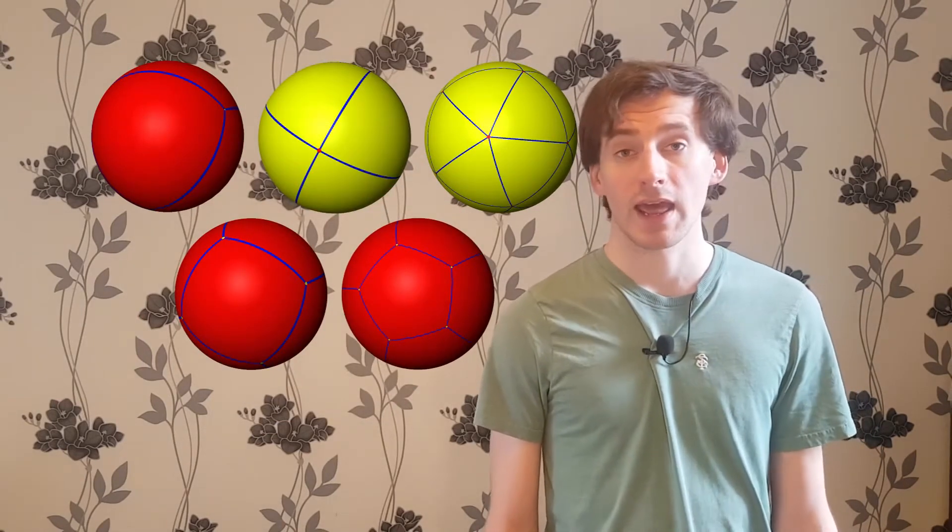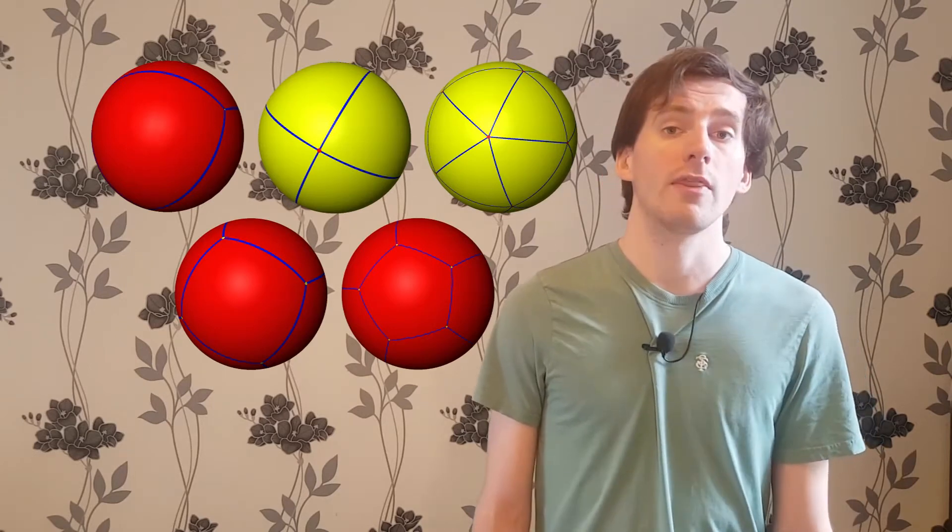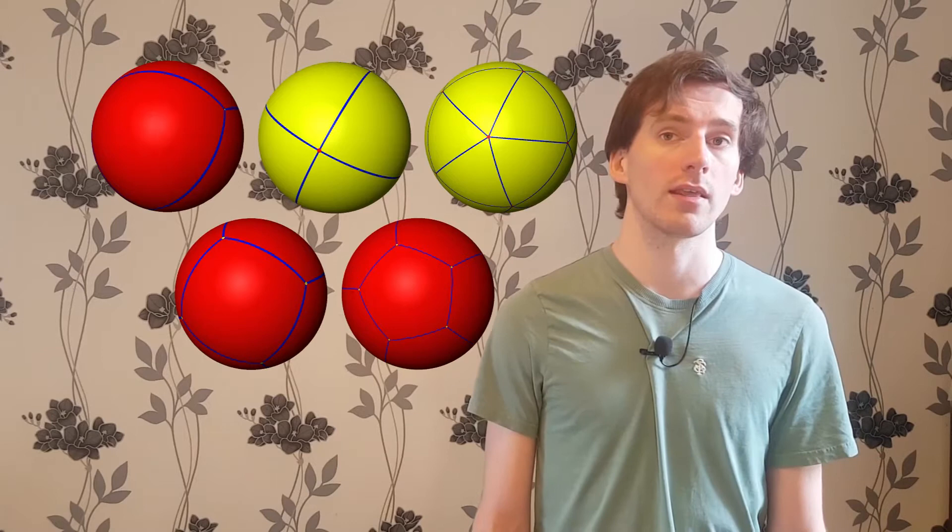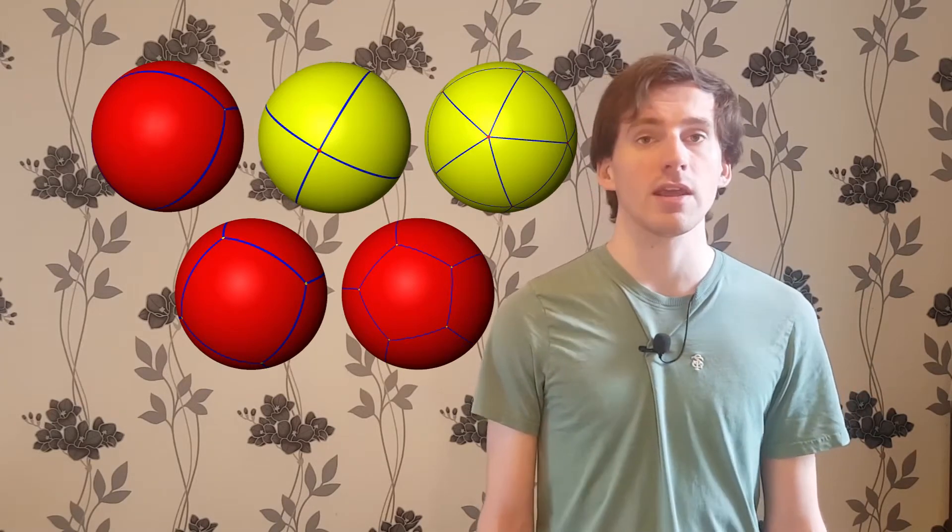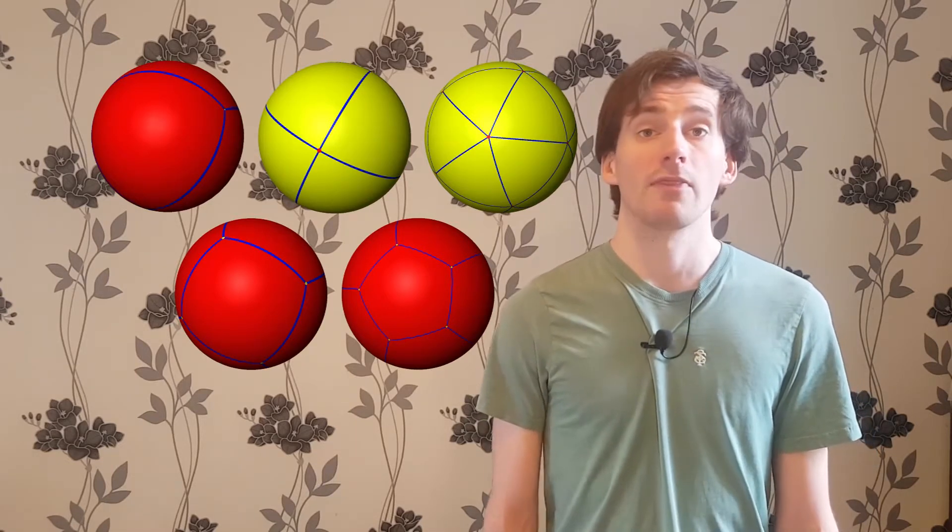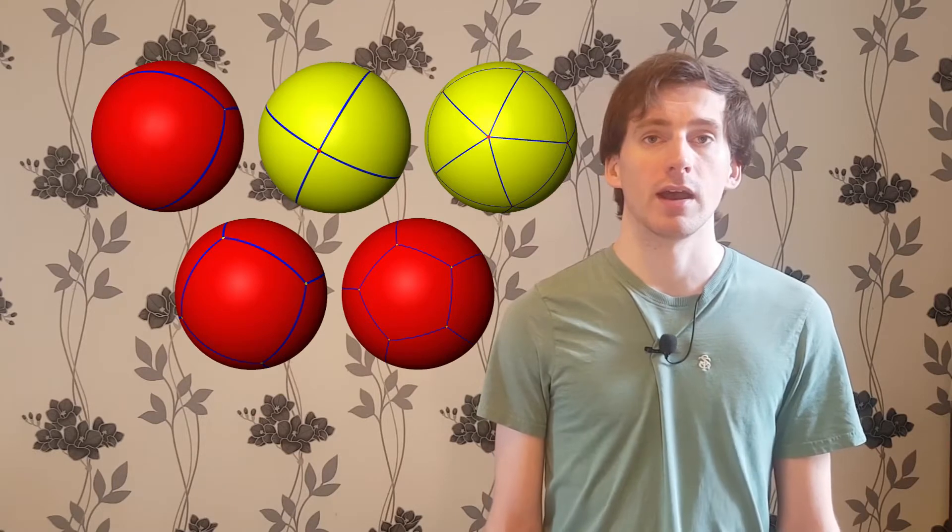For a regular hexagon, heptagon, octagon, and so on, the internal angles will be greater than 120 degrees, so you can't even fit three around a corner, and there are no regular tilings for any of these shapes. This means that there are five regular tilings.